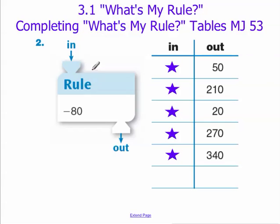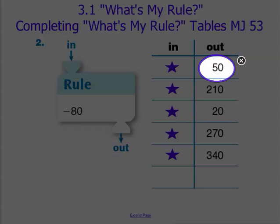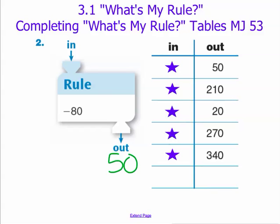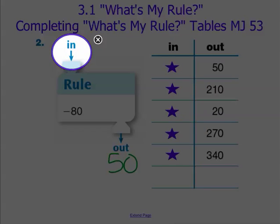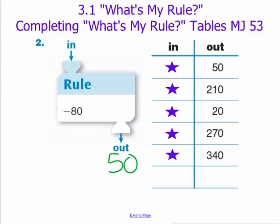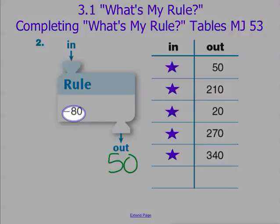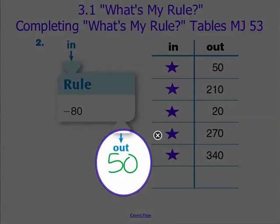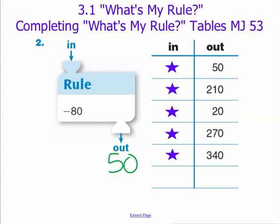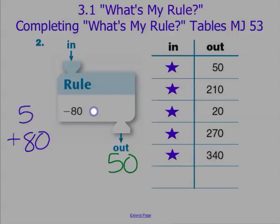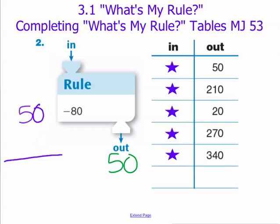For instance, our very first output that's given is 50. We know that our final product is 50, but we're not quite sure what our input is. We can think of this in a couple of ways. One way would be: what number minus 80 gives us our output of 50? We can also look at this in reverse — we take our output of 50 and do the opposite of our rule. The opposite of subtracting 80 would be to add 80. So we take our 50, add 80, and we would get 130.